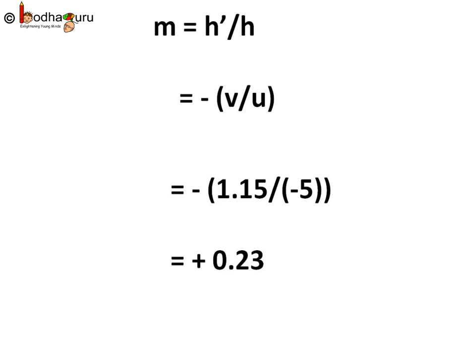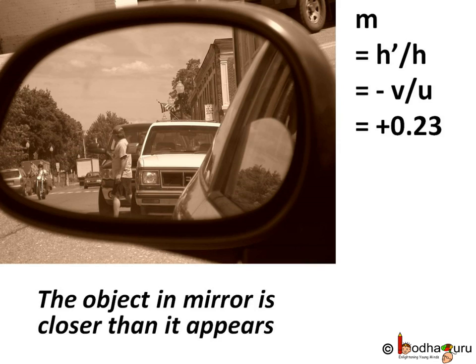Magnification is 0.23 means h'/h is equal to 0.23. Image is lesser than the object by a factor of 0.23. Highly diminished. So the object looks way smaller than its original size.